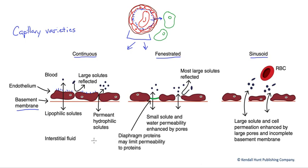All three layers — the glycocalyx, the cells themselves, and the basement membrane — form barriers to movement of solutes. In continuous capillaries, we have a continuous basement membrane with no gaps. The paracellular gaps, or pores, are very small and tend to only allow small solutes and water to pass through. Larger solutes like plasma proteins are trapped in the bloodstream and cannot exit readily into the interstitial fluid.